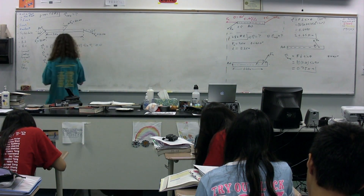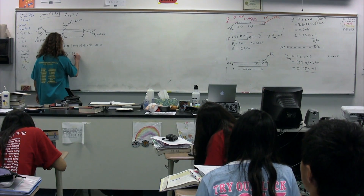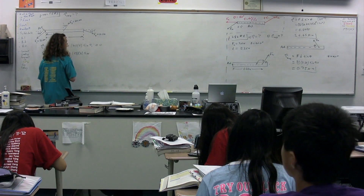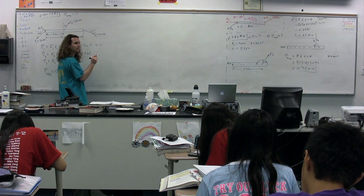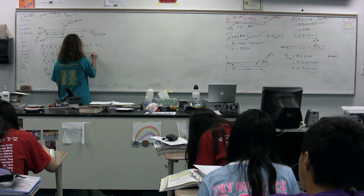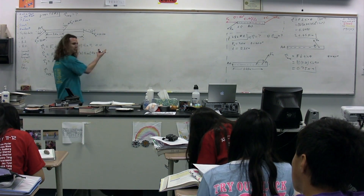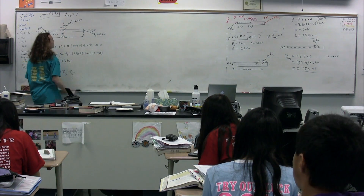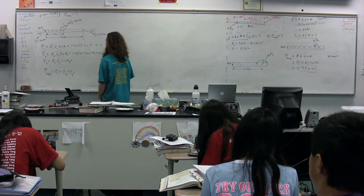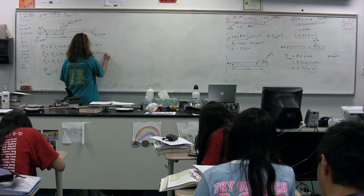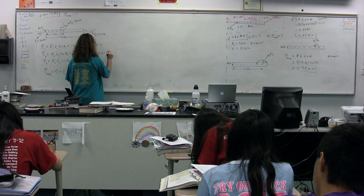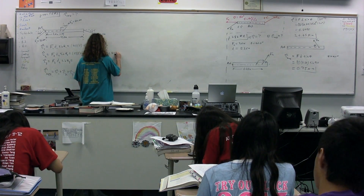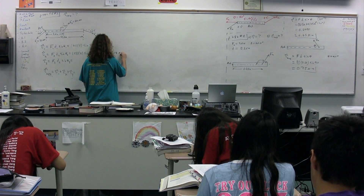Force 2 is 25 newtons. Lever arm 2 is 2.5 meters — actually 2 meters. The sine of theta 2: how did you get 121? It's 90 plus 31. I'm going to put 90 plus 31 just to be clear — yes, 121 degrees. Notice the lever arm is right here, so we need to add 90 degrees to our 31 degrees. The torque due to force 2 is 42.858 newton meters.